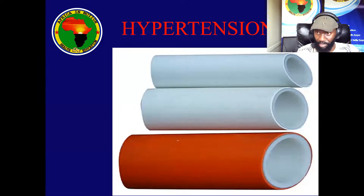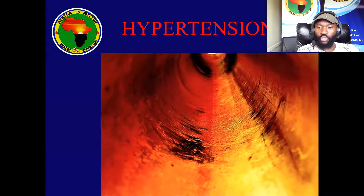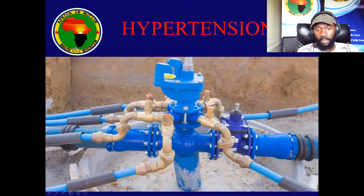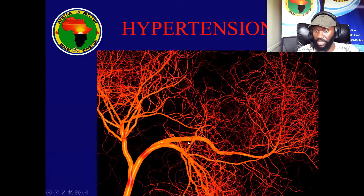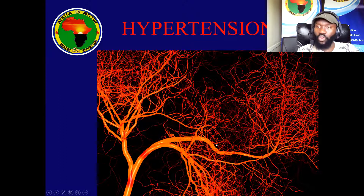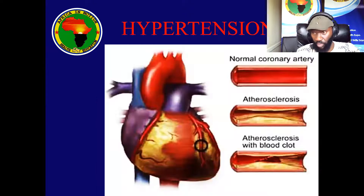Once you understand water passing through big, medium, and small pipes, it becomes easy to understand hypertension. The vessel should not have any blockage inside — no rust, no obstacle for the water to pass through. If anything is blocking a blood vessel, blood will not reach its destination. We have a main pipe coming from the generator — the heart — which gives two branches, big and medium, and the medium vessels supply blood to the terminal ends. If the generator pressure is too high, those small pipes will suffer.